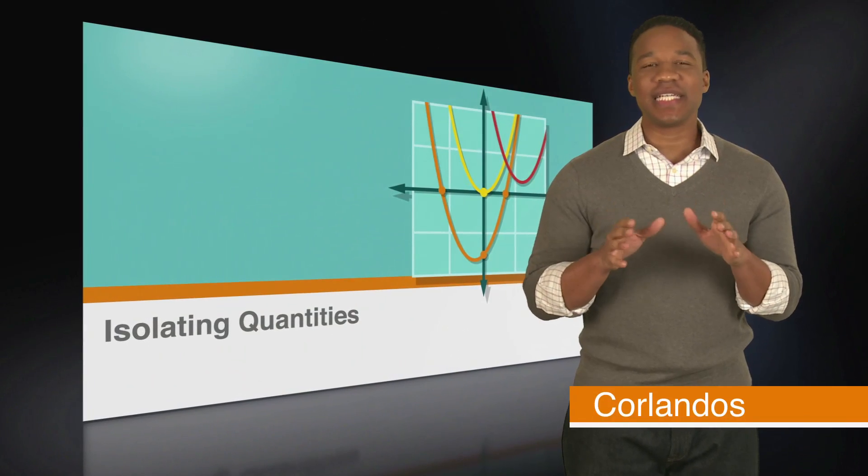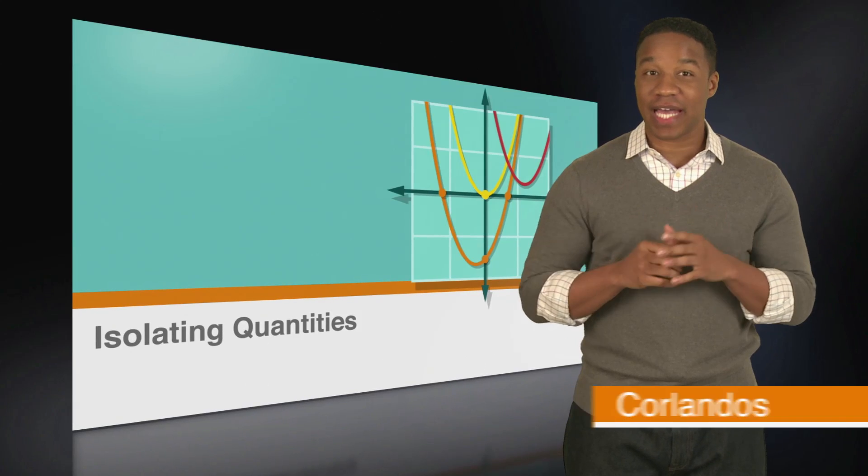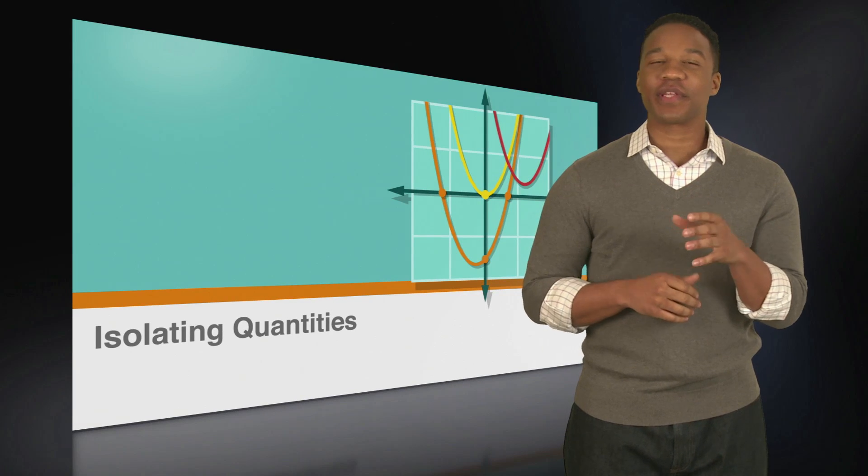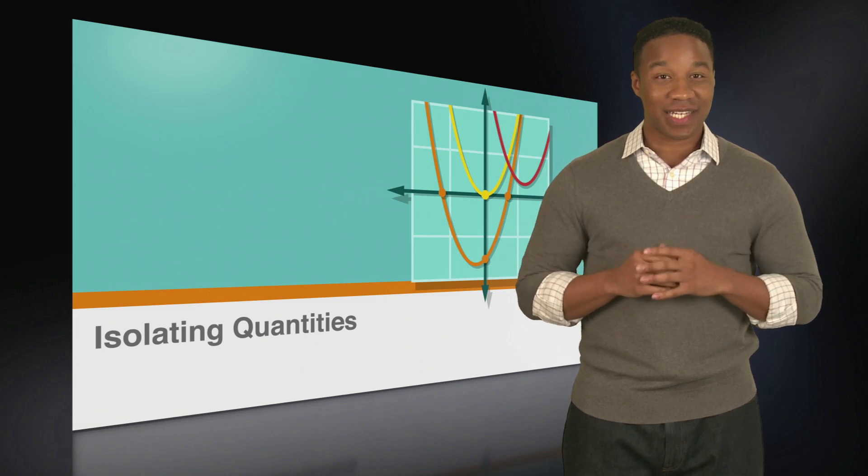One way to improve your SAT score is to be familiar with all the different types of questions that can be asked. Once you become familiar with a certain question type, you won't have to work so hard figuring out how to solve it. With that in mind, let's discuss one of the types of math questions you're likely to see on the SAT.